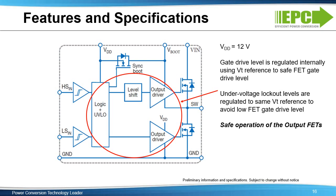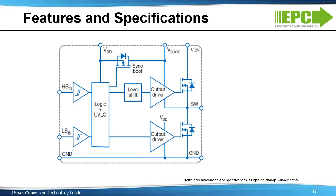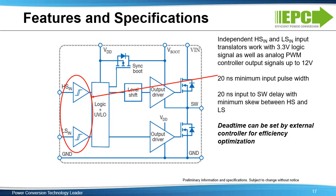Additional protection is provided by separate high-side and low-side under-voltage lockout (UVLO) circuits, with lockout levels referenced to the same gate drive feedback parameter to avoid operating the output FETs in a high RDS(on) state. The inputs of the EPC-2152 are compatible with 3.3-volt logic, allowing users to interface directly with an MCU or with analog controllers. Additional features include 20 nanosecond minimum input pulse widths and 20 nanosecond delay time from input to output.